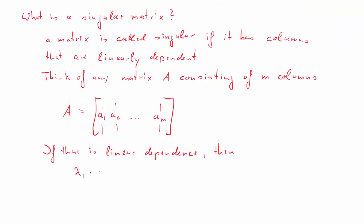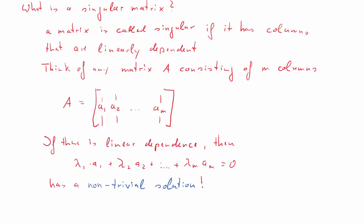And if there is linear dependence, then we can write down the following equation. So we'll create a linear combination of all the columns. So lambda 1, the lambdas are scalars, lambda 1 times A1, all the way to lambda m times AM, and that equals 0. Now if that equation has what we call a non-trivial solution, I'll say quickly what that is in a moment, if it has a non-trivial solution, then there's linear dependence, and then the matrix is singular.